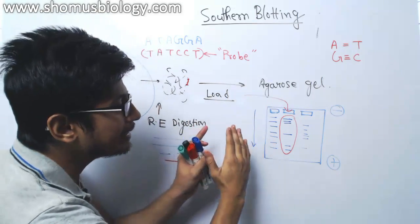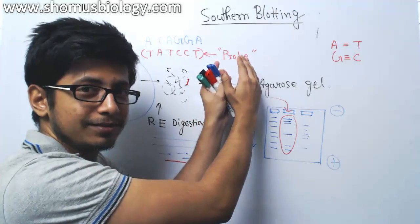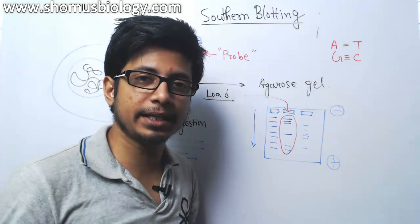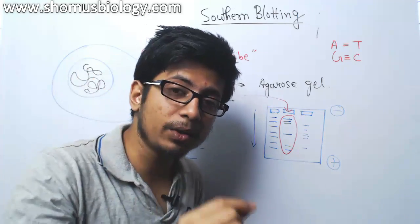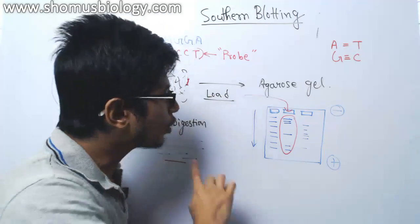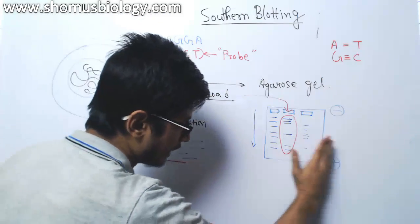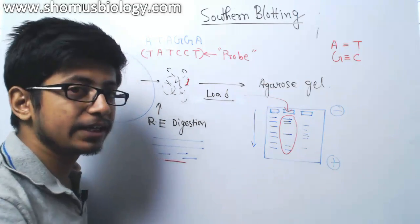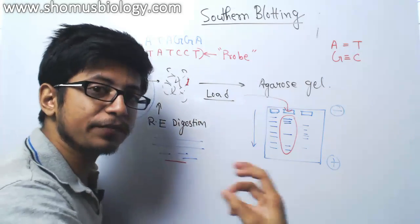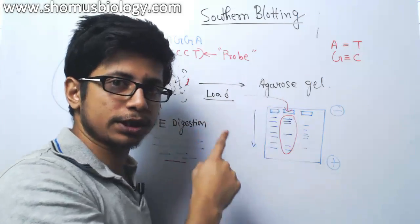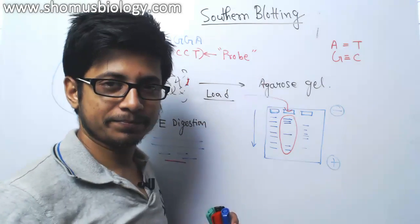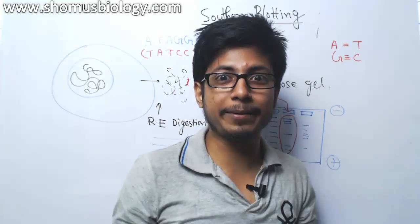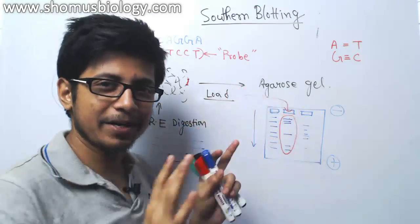There is only one way to know that: with the hybridization technique we discussed earlier. When we combine electrophoresis with hybridization, it gives us enough power to not only separate the DNA from each other but also to find out exactly the targeted DNA. This whole process — running electrophoresis and then tagging a specific target DNA with a probe and finding out the specific target DNA — this whole process is known as Southern blotting.